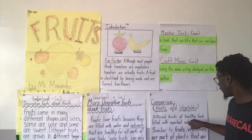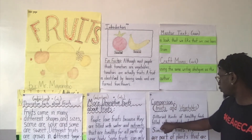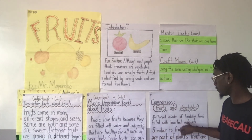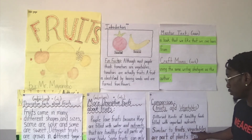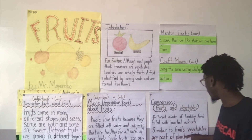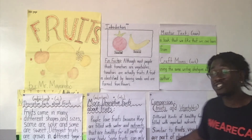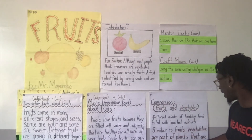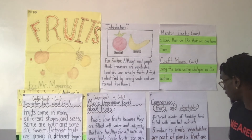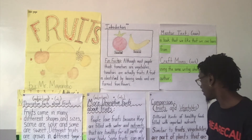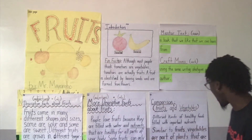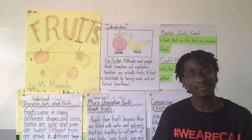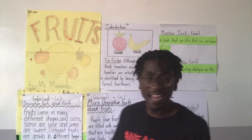Different kinds of healthy foods filled with important nutrients. Similar to fruits, vegetables are a part of plants that are consumed by humans. Some vegetables are soft, some are spicy, some are crunchy, and some are bland.